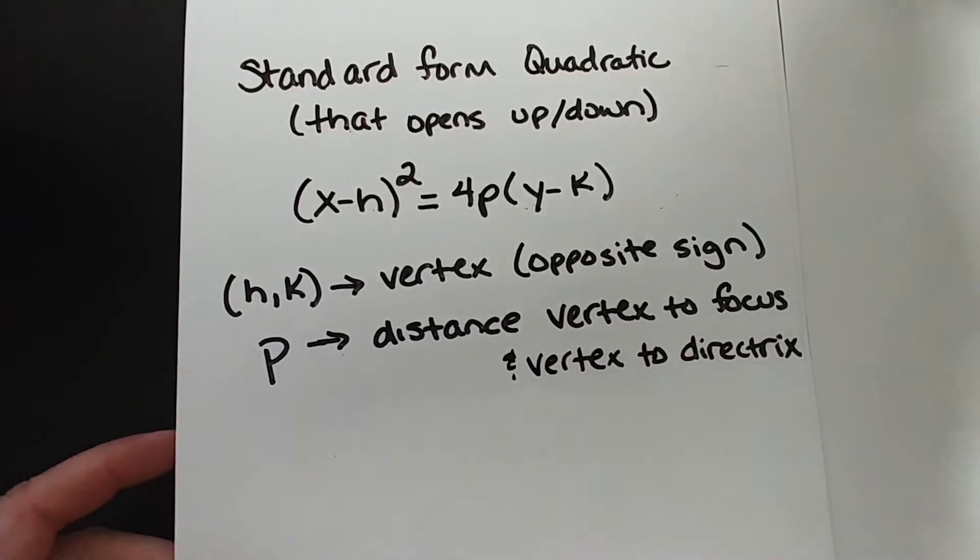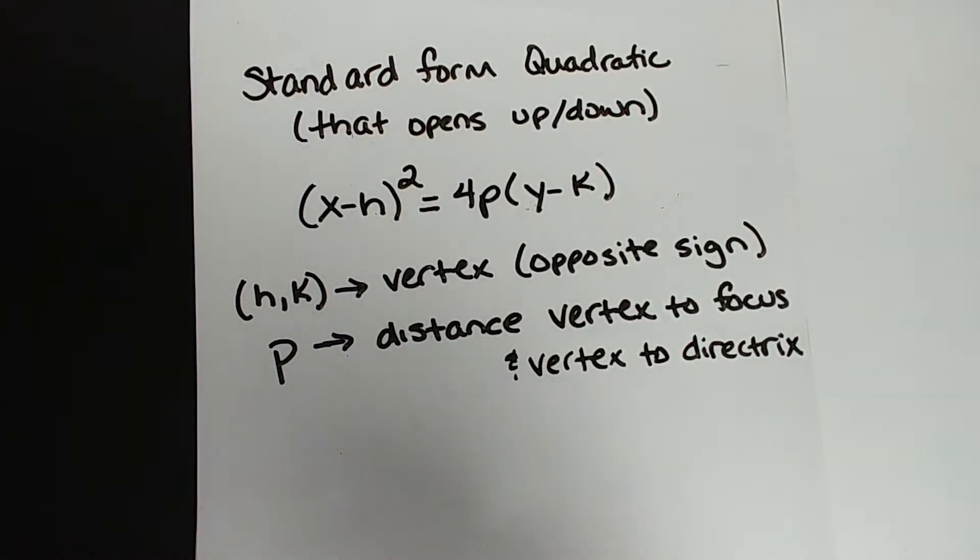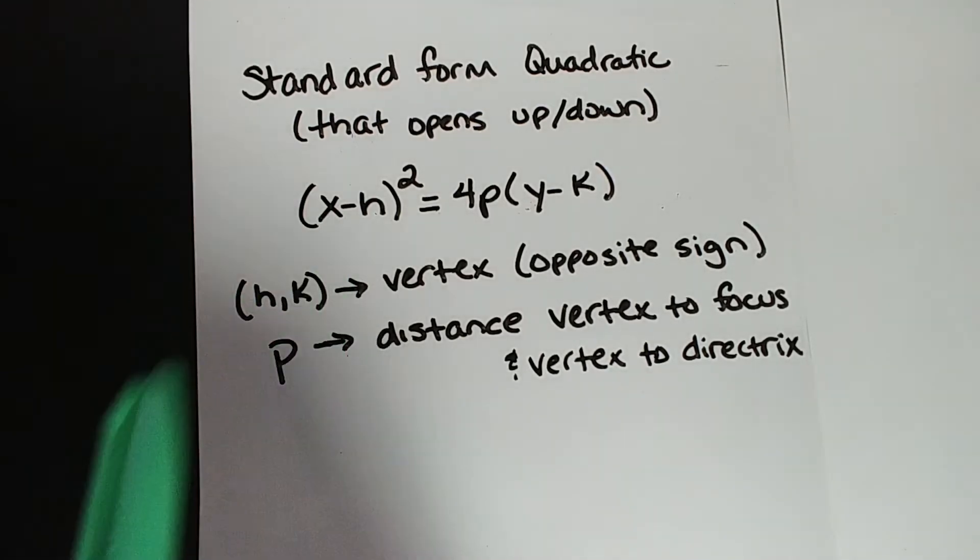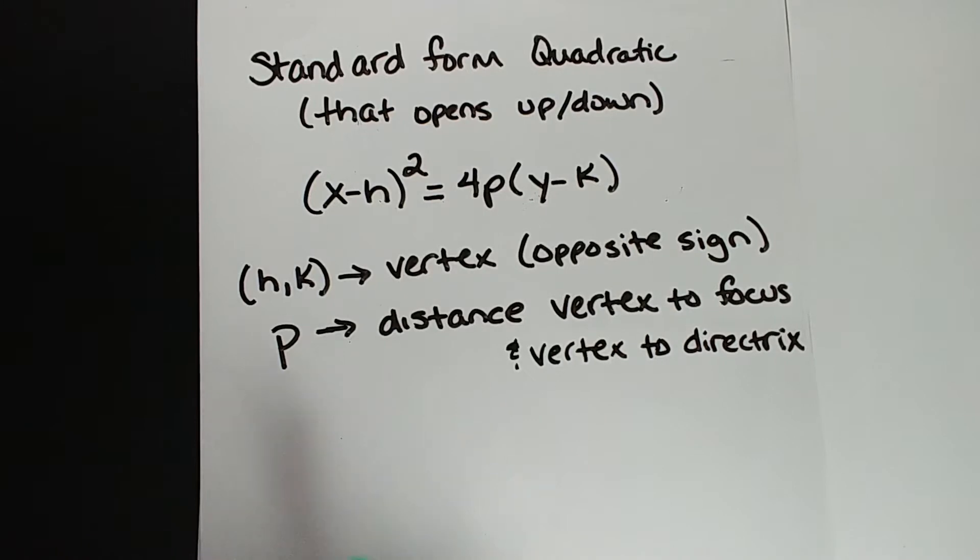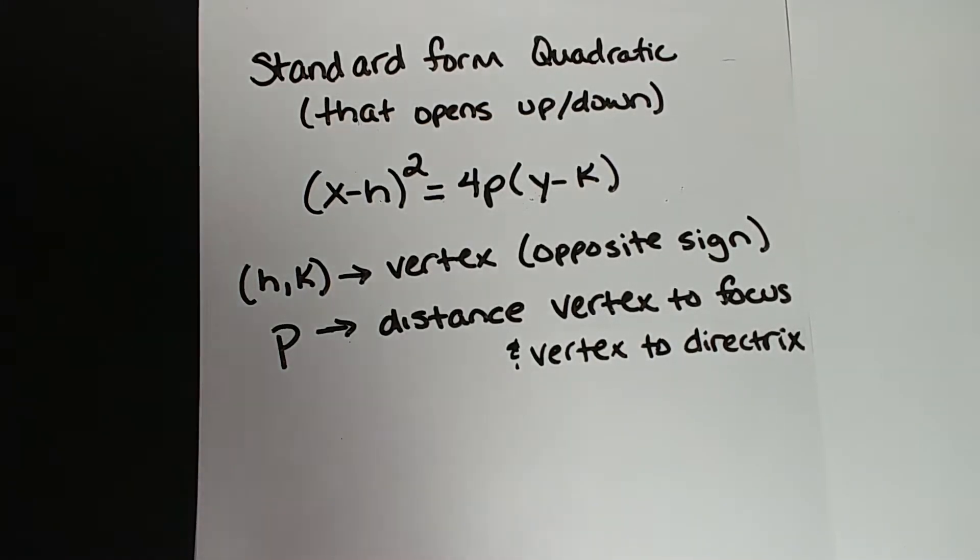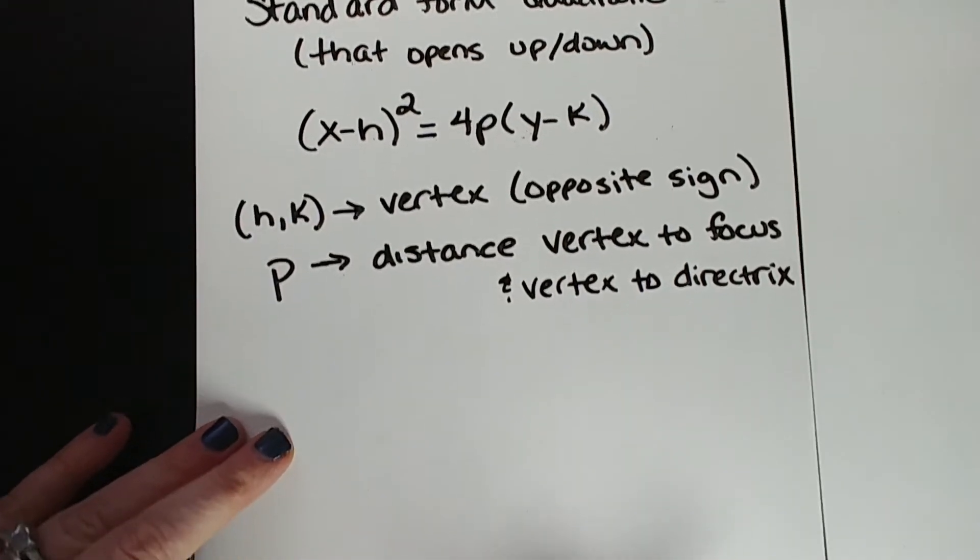Standard form for a quadratic that opens up or down: (x-h)² = 4p(y-k). hk is the vertex. Remember, it's opposite sign. So if you had x minus 2, that would mean the vertex, the x coordinate of the vertex is at positive 2. So x minus h is really negative h. P is the distance from the vertex to the focus. It's also the distance to the directrix.